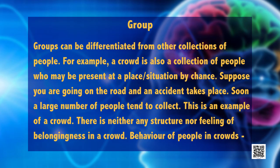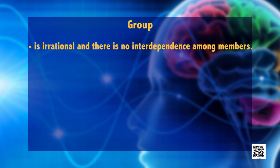Groups can be differentiated from mere collections of people. A crowd is a collection of people present at a place by chance — for example, people gathering after a road accident. There is neither any structure nor a feeling of belongingness in a crowd. Behaviour in a crowd is irrational and there is no interdependence among members.